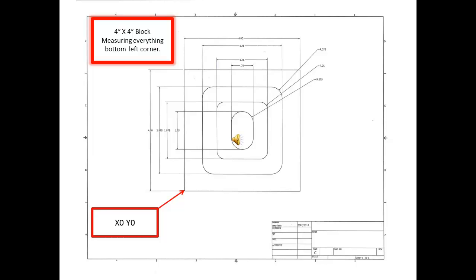Here we have a typical blueprint that we would use in MTT 250. It's a 4x4 block and everything is measured from the bottom left corner — that would be x0, y0. This would be an engraving process; we would engrave at 25,000ths deep. Remember, everything is measured from the bottom left corner, x0 and y0.